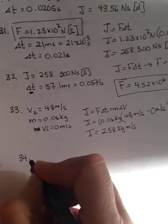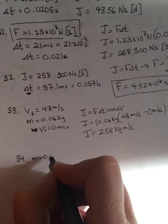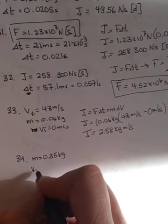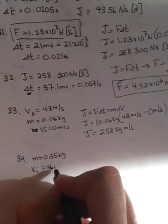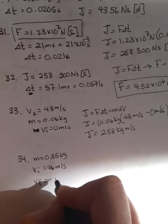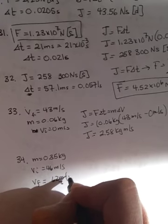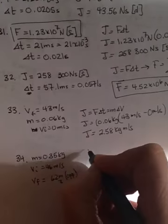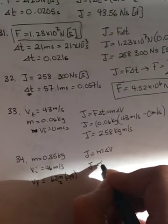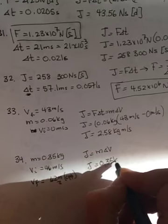34 says a 0.035 kilogram ball. It's initially moving 46 meters per second. And then you hit it, and it goes in the opposite direction, 62 meters per second. So this is opposite. And we're looking for J, which will be M delta V again. So 0.35 kilograms. But now you...